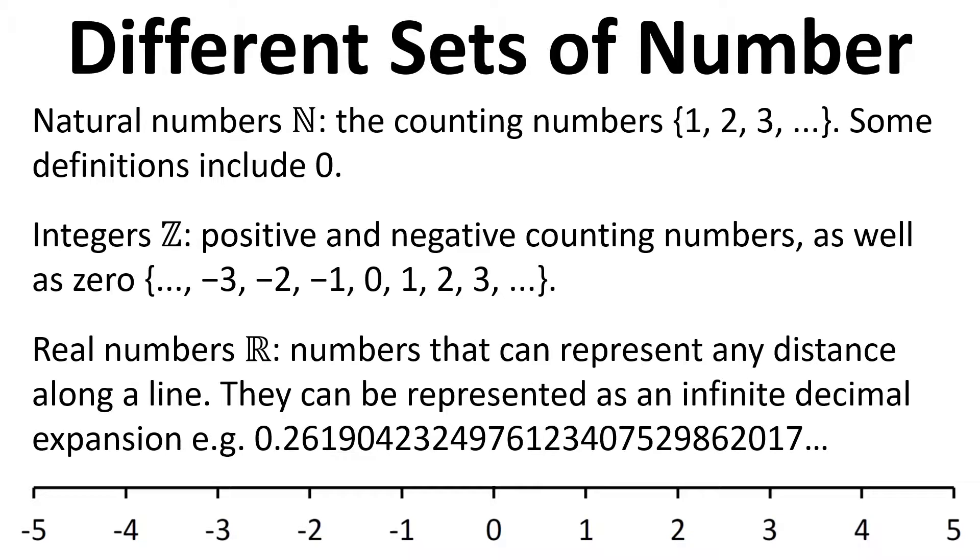We also have the real numbers, represented by this symbol here - this capital R with these double lines. These numbers can represent any distance along a line. They can be represented as an infinite decimal expansion. For example, here, a number that just keeps going with an infinite or unlimited number of decimal places. If we were to look at a point on this line, we could measure it to an infinite degree of accuracy. We could be anywhere along this line because we've got an unlimited number of decimal places that we can use.